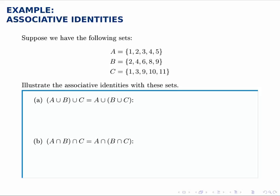So for part A we'll take A union B first, starting with everything in A and then adding in any elements from B that aren't already counted. So 2 and 4 are already there, we'll add in 6, 8, and 9, and then taking the union of that answer with C.